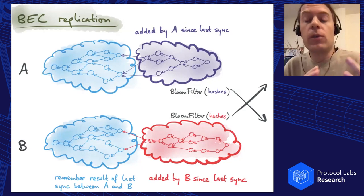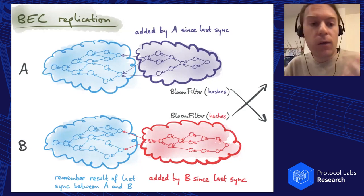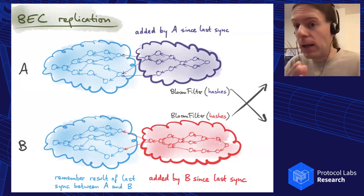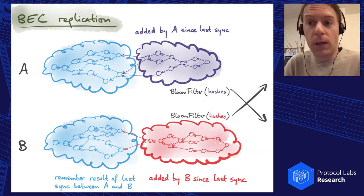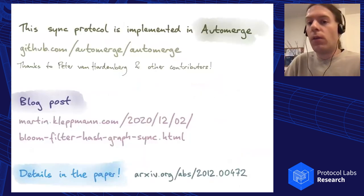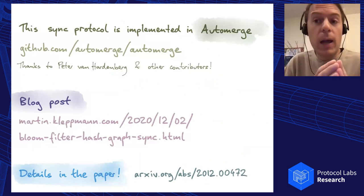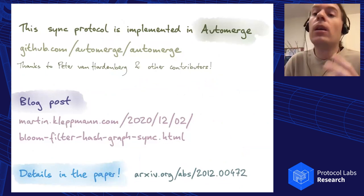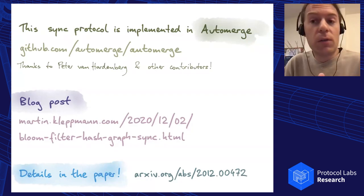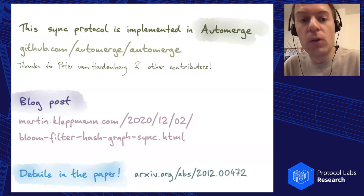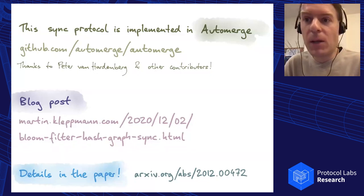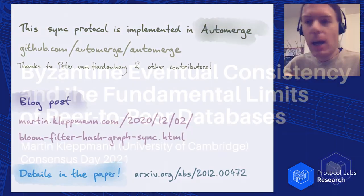The whole thing is resilient and achieves Byzantine eventual consistency in a system with arbitrarily many malicious nodes. We have implemented this algorithm in a CRDT library that I work on called Automerge, and there's also a blog post on this hash graph reconciliation algorithm if you're interested, and of course the paper as I mentioned. So that's all from me. Happy to take any questions.